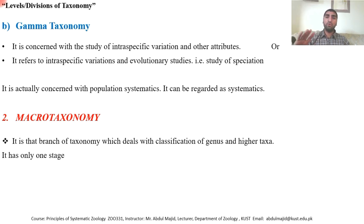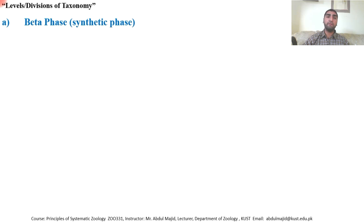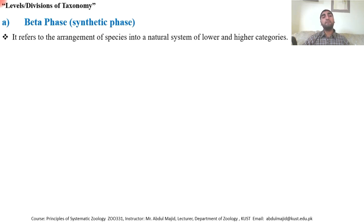Macro taxonomy has only one stage, known as beta taxonomy, beta phase, or synthetic phase. It refers to the arrangement of species into a natural system of lower and higher categories.